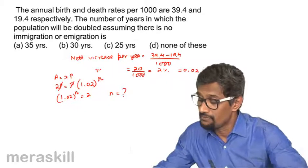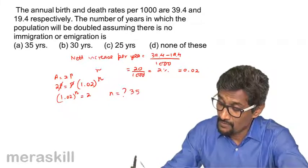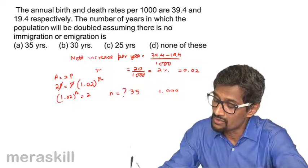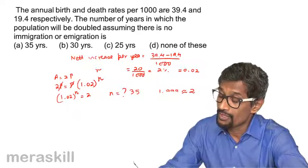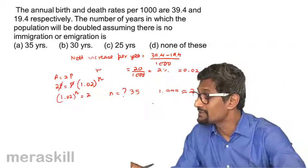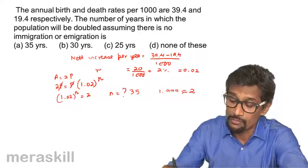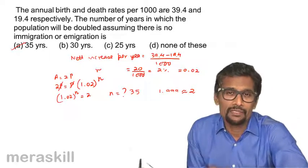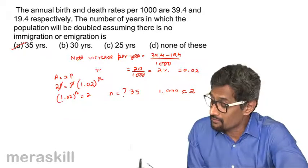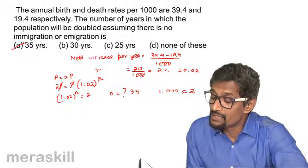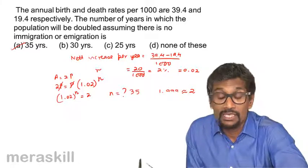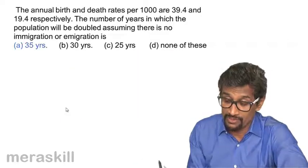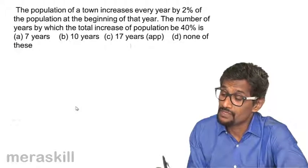When N is 35, 1.02 raised to 35 is roughly 1.999, which is approximately 2. Therefore in 35 years the population will become double. If you do it 36 times it becomes more than 2, so among these options, 35 years is the answer — giving a little leverage for variations in calculations. So the population will become double in 35 years.